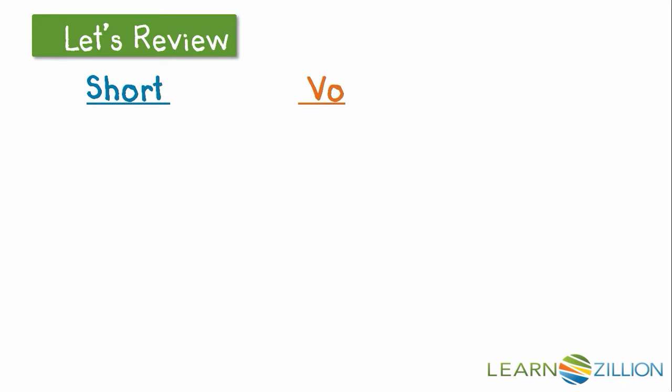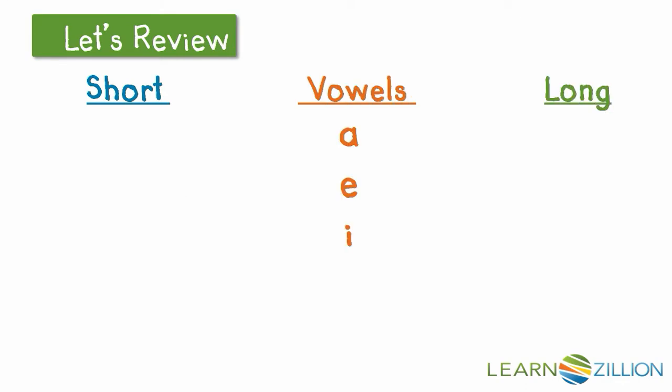Some of the letters in our alphabet are vowels: a, e, i, o, and u. Each of the vowels has a short vowel sound and a long vowel sound.